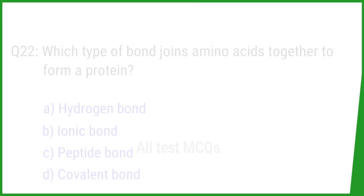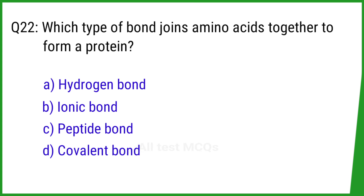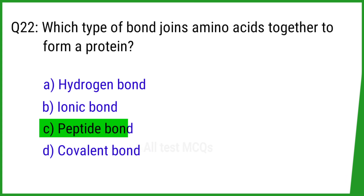Question number 22. Which type of bond joins amino acids together to form a protein? The right answer is option C: Peptide bond.